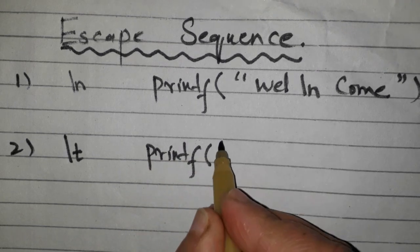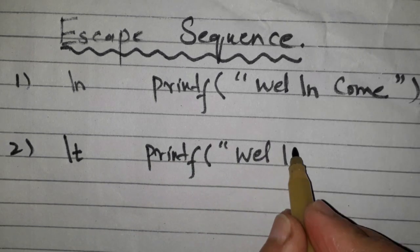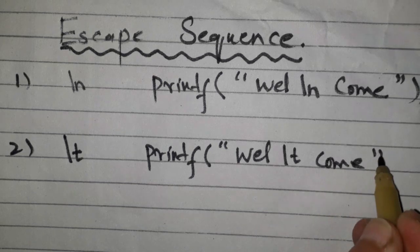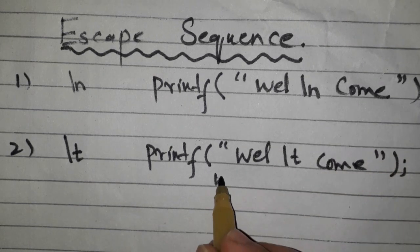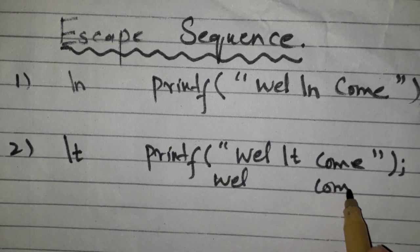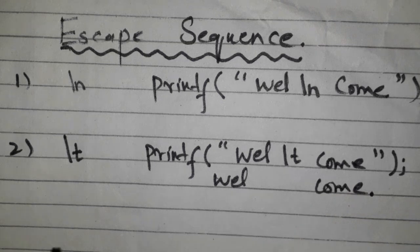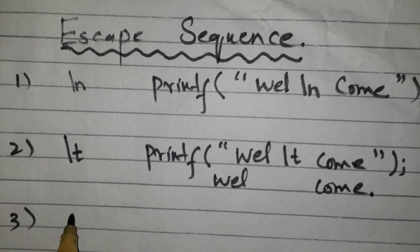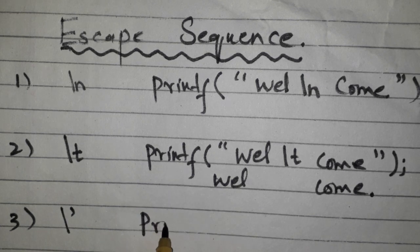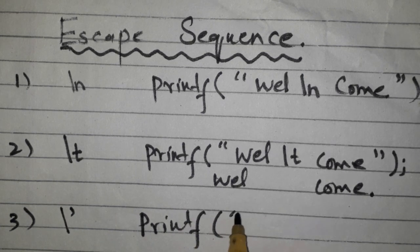Backslash t is used to print five spaces. Backslash t means tab. So well backslash t means five spaces will be added between well and come.